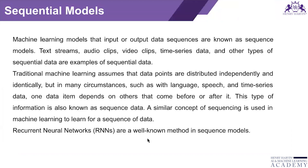RNN is a well-known method in sequence modeling. For numerical data, we use ANN — artificial neural network. If we have image data, we proceed through CNN. And if we have text-based data, we will use RNN.